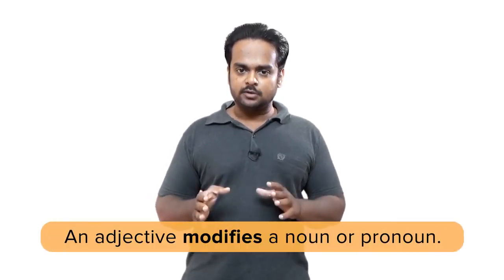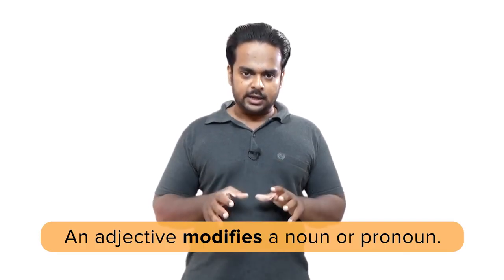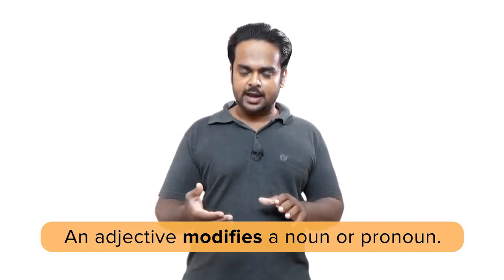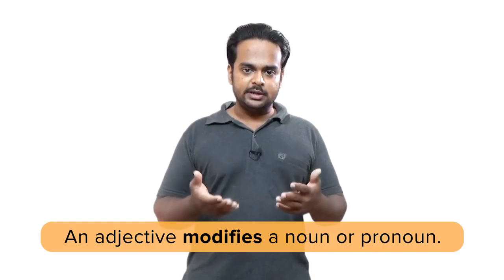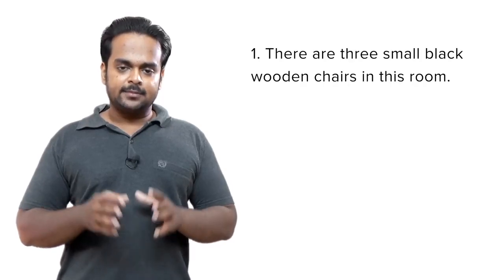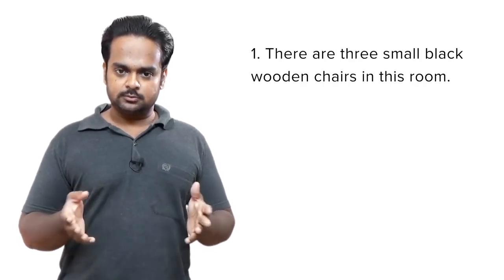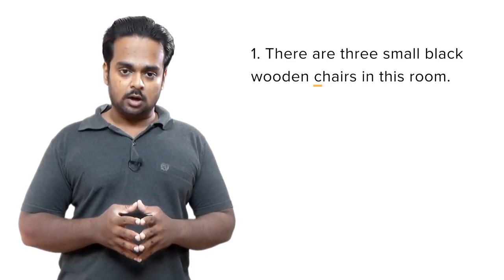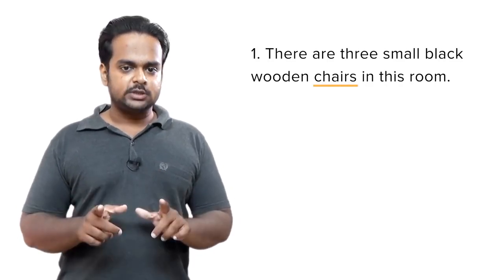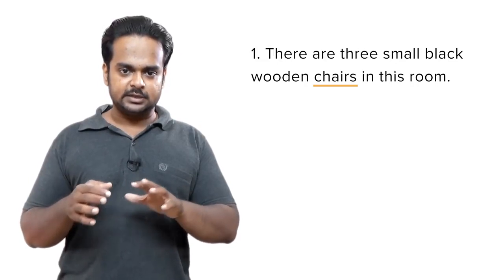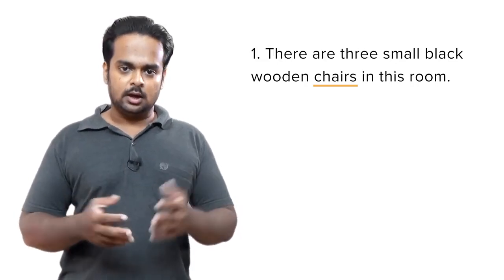Well, that's easy. An adjective is a word that gives information about a noun or pronoun. In grammar we say that an adjective modifies a noun or pronoun. Modify here means to change the noun or pronoun by giving more information about it. For example, take a look at this sentence: there are three small black wooden chairs in this room. Focus on the noun chairs — can you tell me which adjectives modify, that is, give more information about chairs?